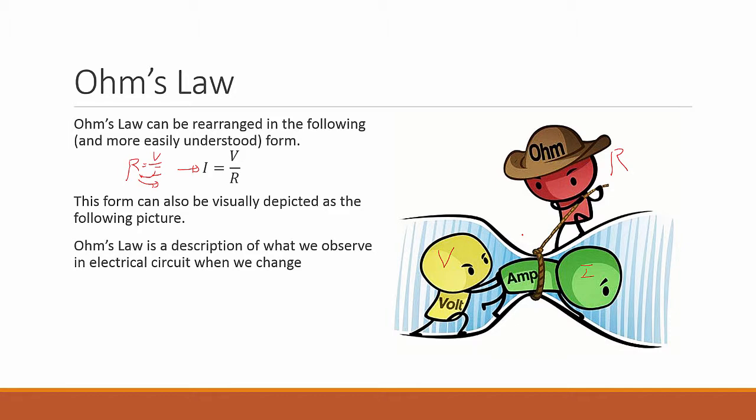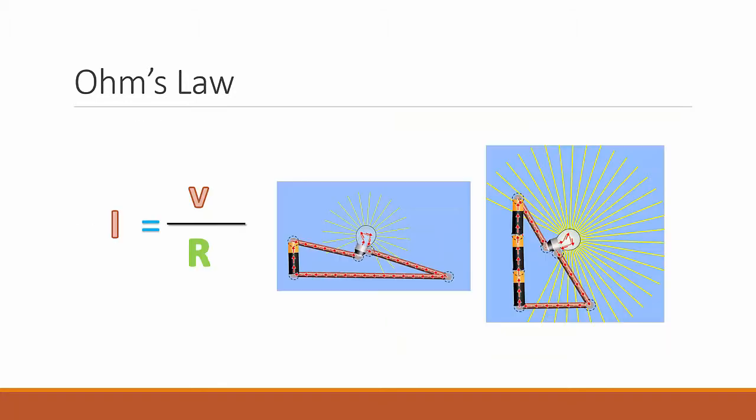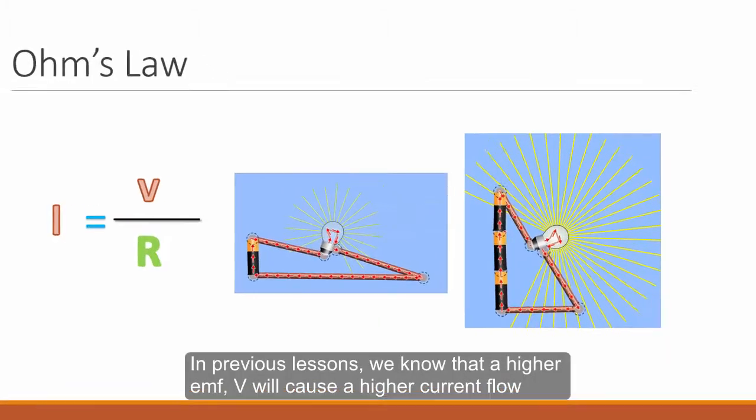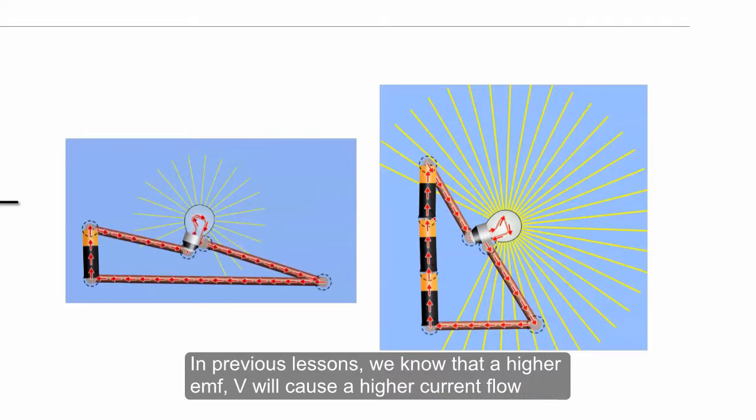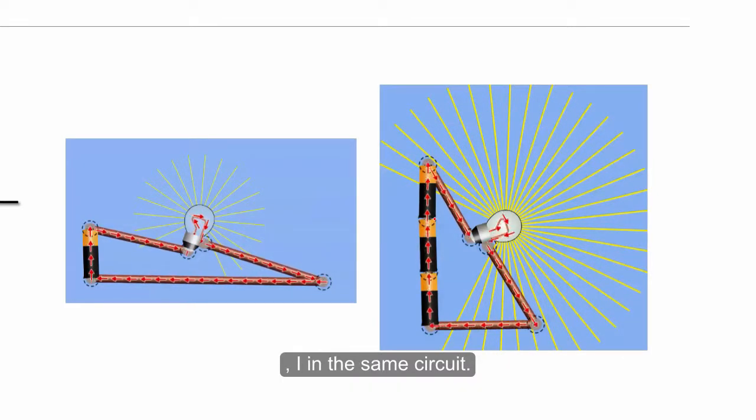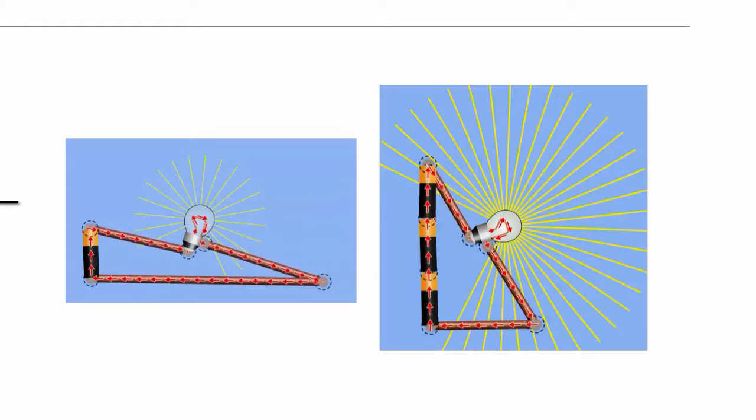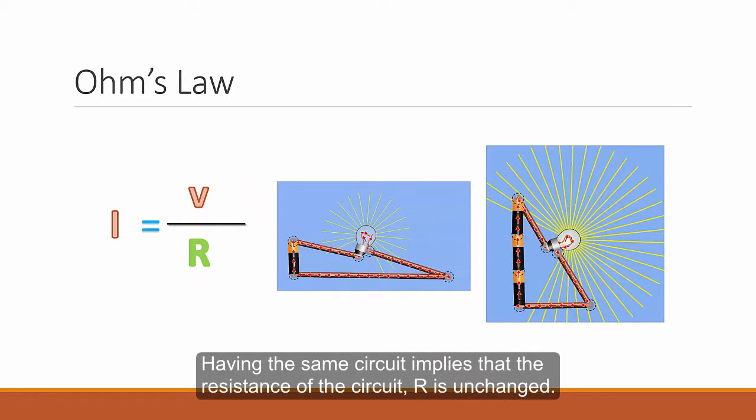Actually, Ohm's Law is just a discussion of what we observe in the electrical circuit when we change the EMF of the battery, or we change the resistance of the circuit. In our previous lesson, we know that a high EMF would cause a high current flow in the same circuit. So if you have more battery, you'll find that with a high EMF, we have more current flowing through. And having the same circuit implies that the resistance of the circuit R is unchanged.